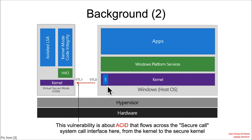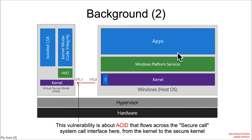This is specifically in what they call a secure call. Normally you have a system call between apps and platform services into the kernel, or a hyper call into the hypervisor — they call this the secure call from the non-secure kernel to the secure kernel. Despite the fact that the picture makes it look like they're in different VMs, they are actually running in the same VM, just using the hypervisor's capability for memory isolation to isolate the security-critical code.